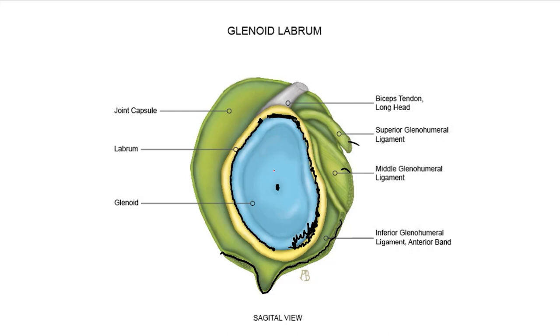The next thing to cover is the biceps. We talked about the importance of understanding how a SLAP lesion relates to the base of the biceps anchor — clinicians want to know if it's in front, underneath, or behind. One key highlight is that the biceps has a highly variable origin: sometimes it comes off posteriorly, sometimes anteriorly, and sometimes it even comes off conjoint with some of the other ligaments. That can be difficult to analyze if you're not used to this variability.